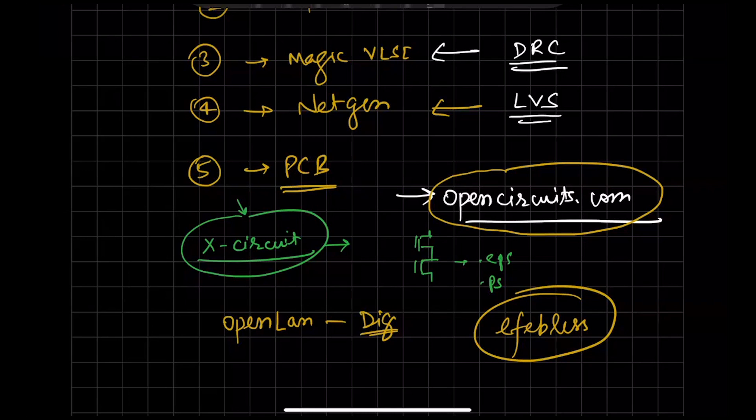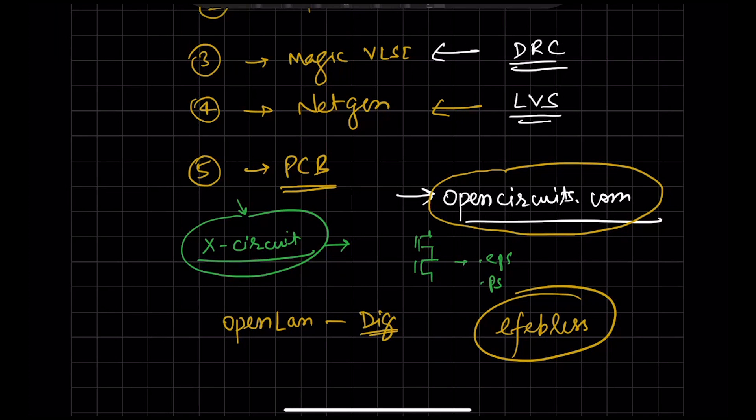So, till now, we understood what are open source tools. What are license tools? What is the difference? How even open source tool can be similar to license one? How much time it will take? And now, at what level we are? We are at the same level. We can do the tape out also. People are doing that. And I have advised you to visit this website in that. Your tape outs are also there. People have done the tape outs. It is already there.